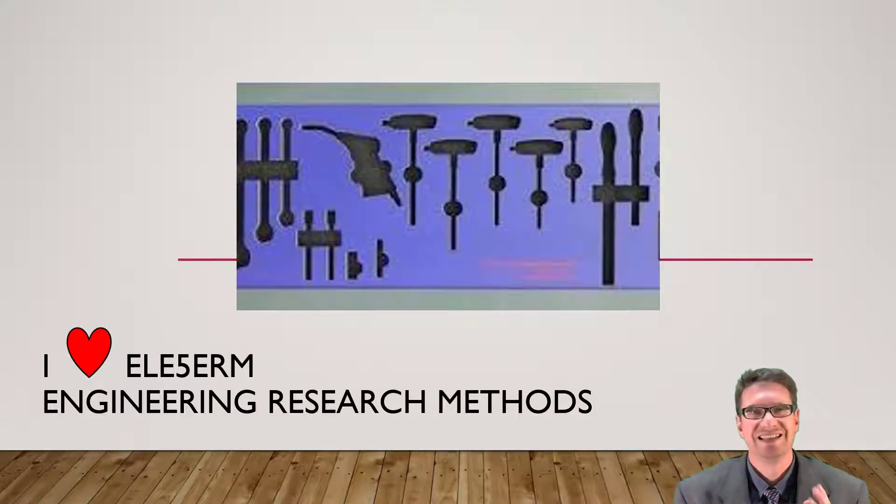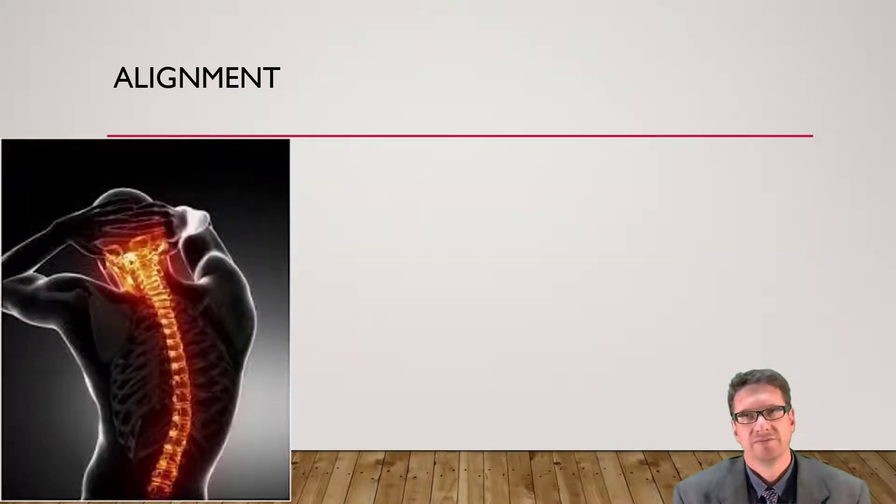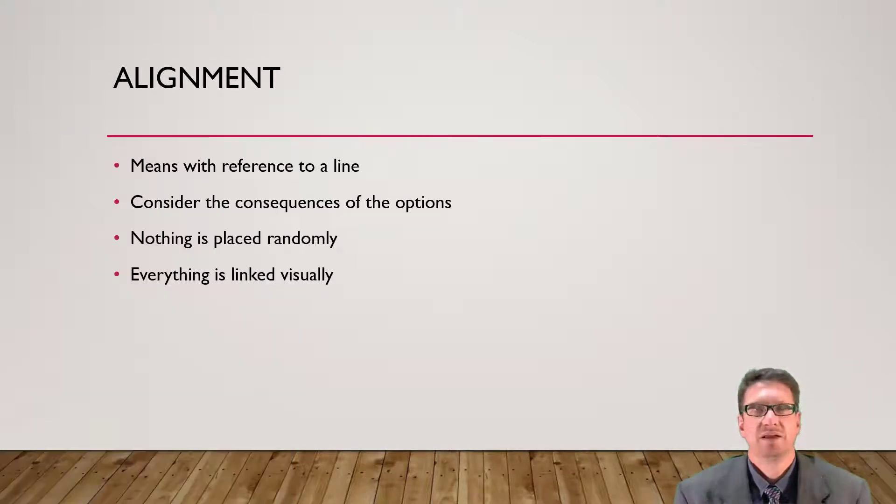The title of this video is Alignment. Alignment is the relationship of things to align. Chiropractors will tell you that the alignment of your spine is the most important part of your body in terms of your health. Similarly, in graphic design and the design of charts and graphs, alignment is absolutely critical. Nothing should be placed randomly on a page. Everything should be linked visually in some way. Everything should be there for a reason and you should know what the reason is.